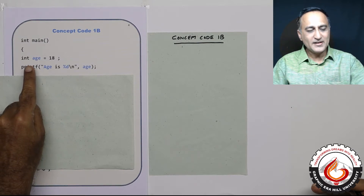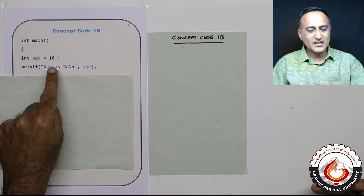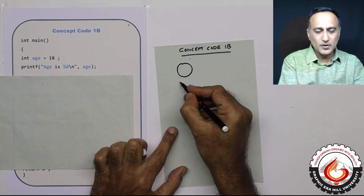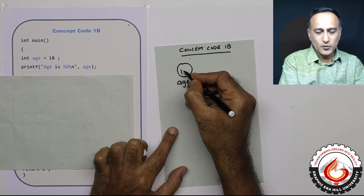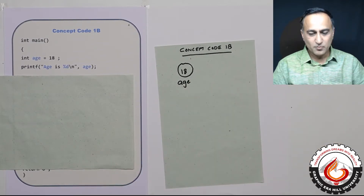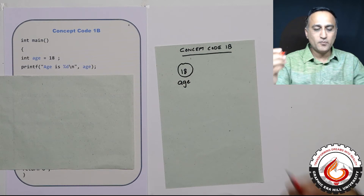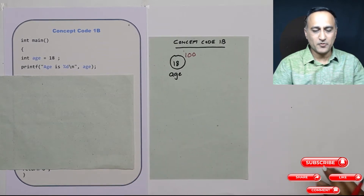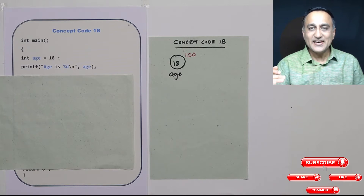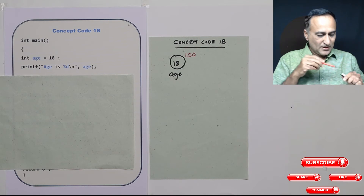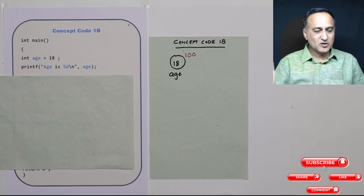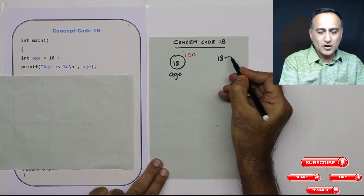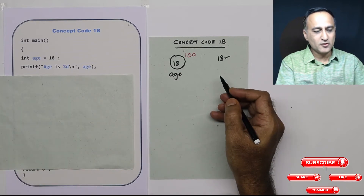Here I have defined an integer with the name `age` and given it the initial value 18. Let's represent this variable: the variable name is `age`, the value in it is 18 — probably the age of most of you watching this video. Let's say this variable resides at address 100 in main memory. The color red indicates the address of variable `age`. When I print `age`, 18 is going to be output on the screen.